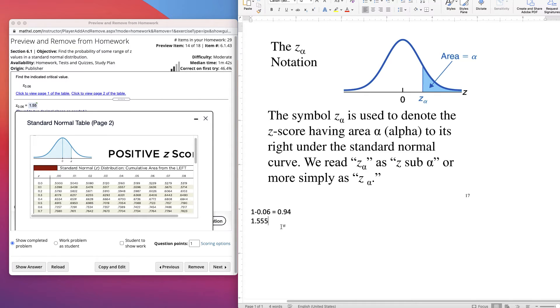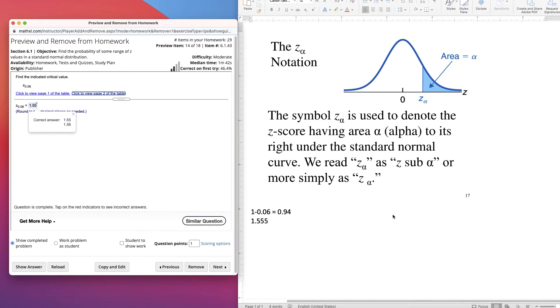They only want two decimal places, so you could just do 1.55 as your option. If you click here, you should see two different answers because if we round it up, it would be 1.56 since it's right in the middle, right? So that's what the z sub alpha means. Area to the right of this value.